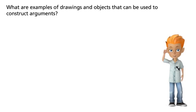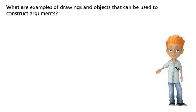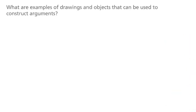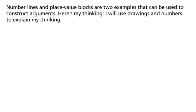Think about how you can prove your conjecture that Nancy and Christopher need to save the same amount. Number lines and place value blocks are two examples that can be used to construct arguments.